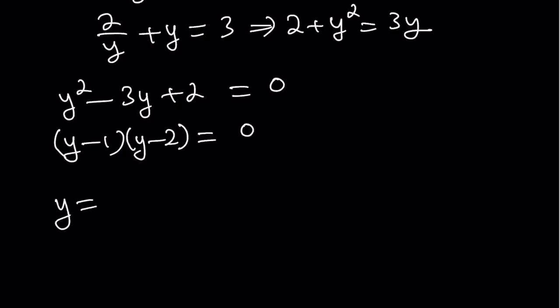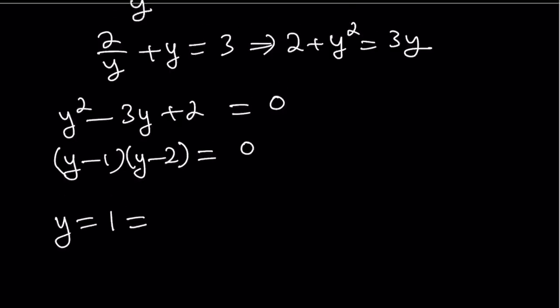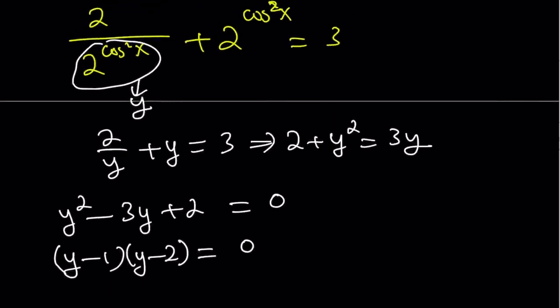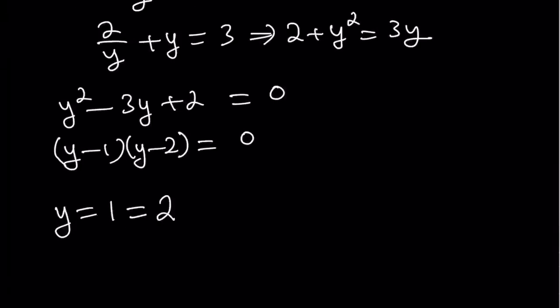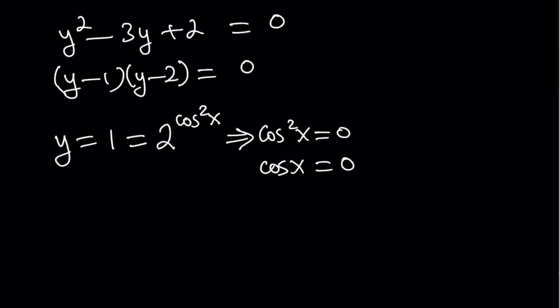So first solution y equals 1. Remember y is 2 to the power cosine squared x. So let's go ahead and set it equal to 2 to the power cosine squared x. Now 2 to the power of something equals 1. That implies that the exponent is 0. So from here we get cosine squared x equals 0 which implies cosine x equals 0. Because if something squared is 0 it has to be 0. Great.